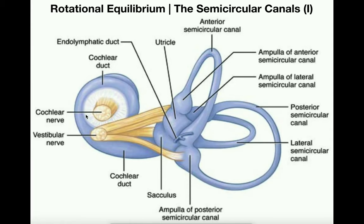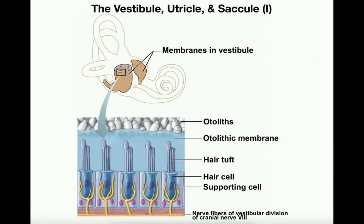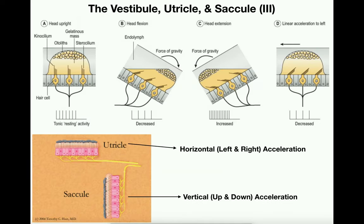In the previous video we went over the first half of the vestibular apparatus. We talked about the two organs of the vestibule — the utricle and the saccule — and we saw that they are involved in detecting changes in static equilibrium, that is head flexion and head extension relative to your head upright, and changes in linear acceleration.